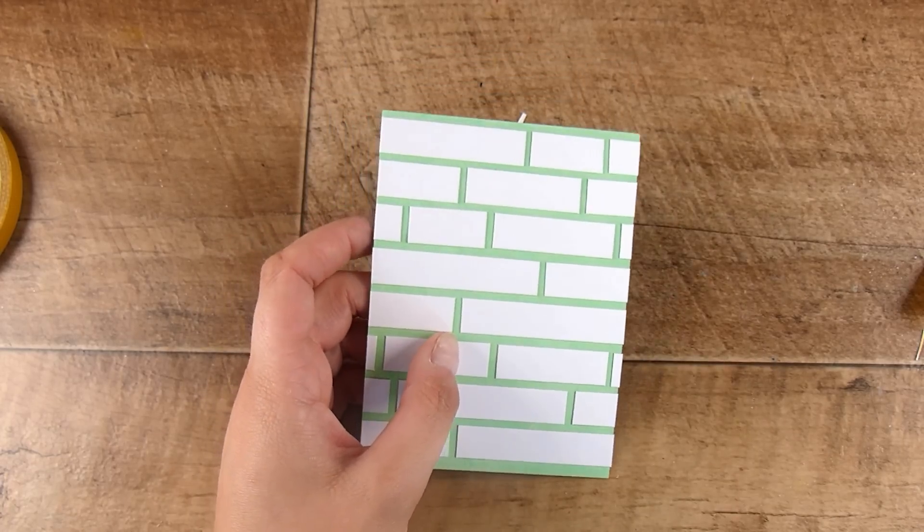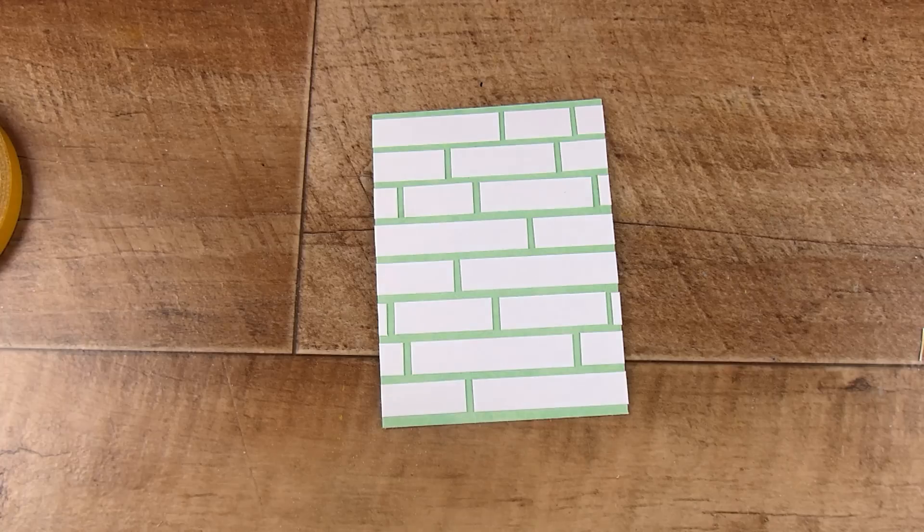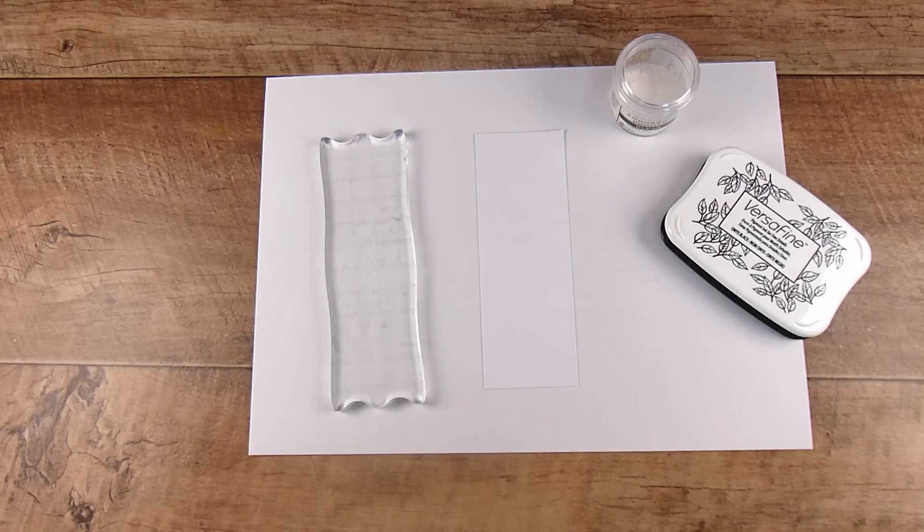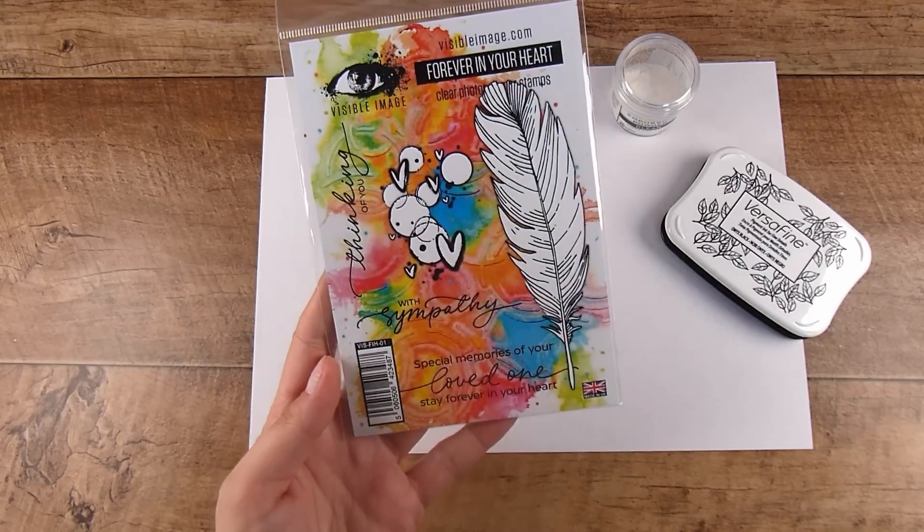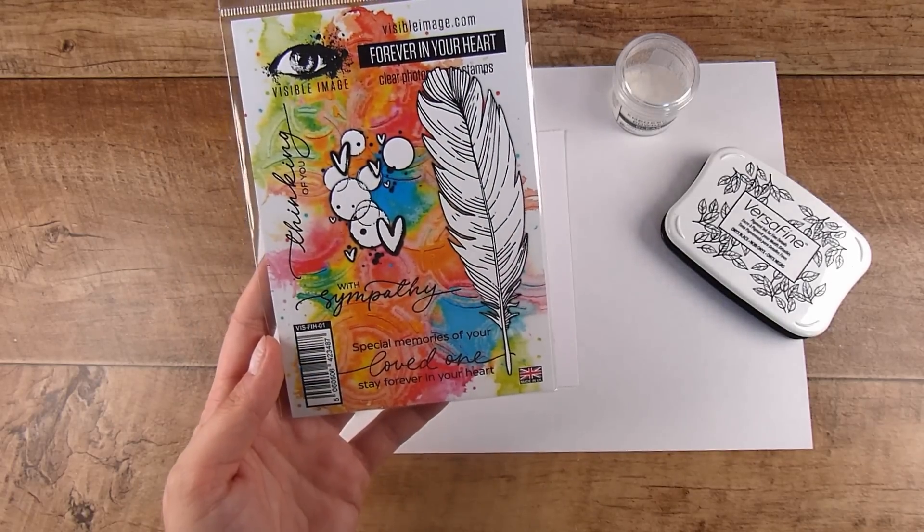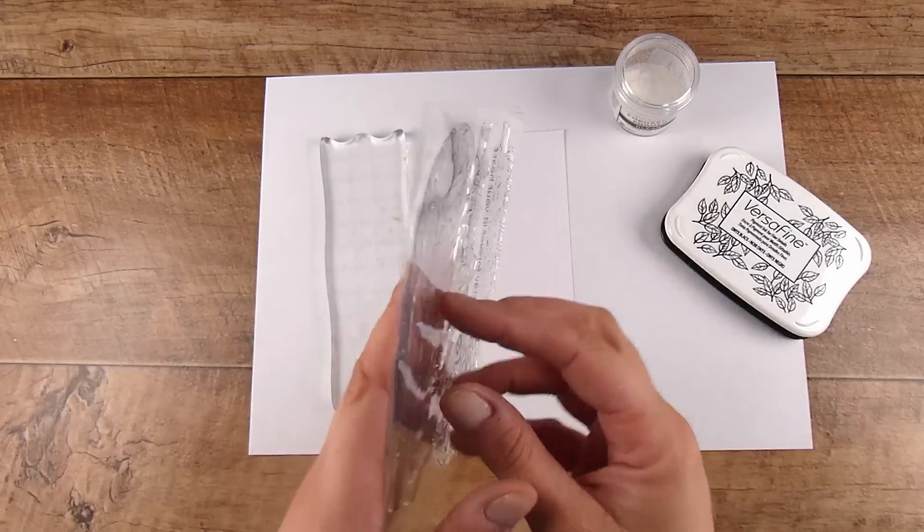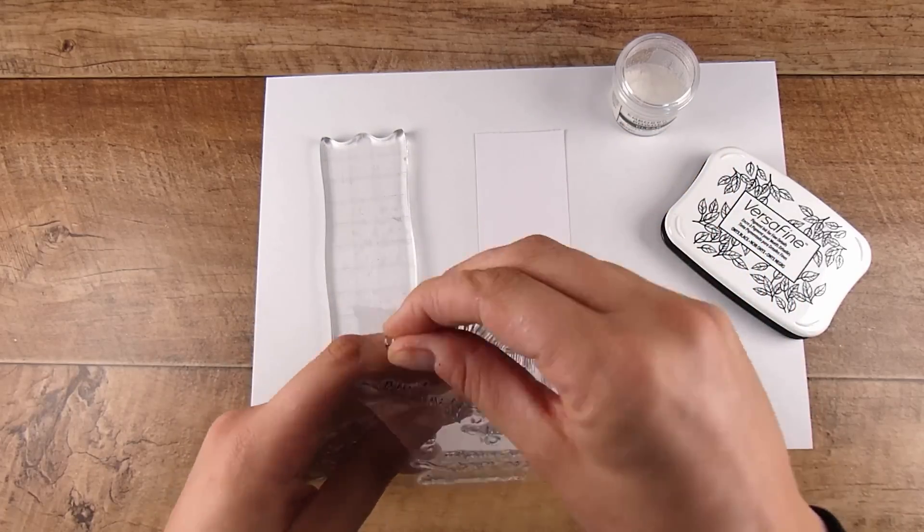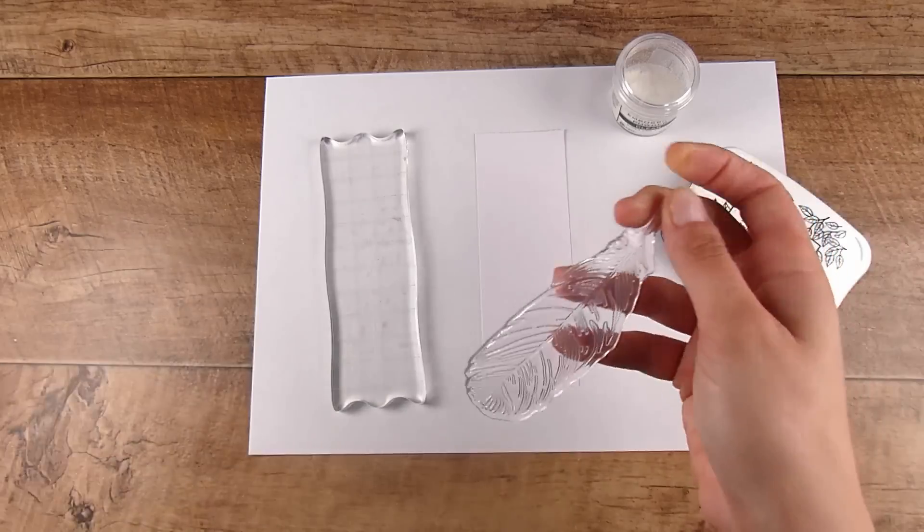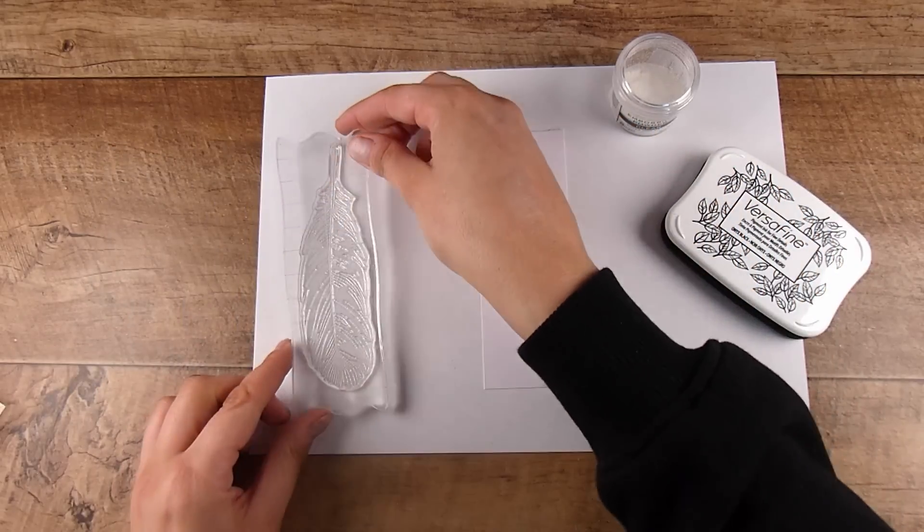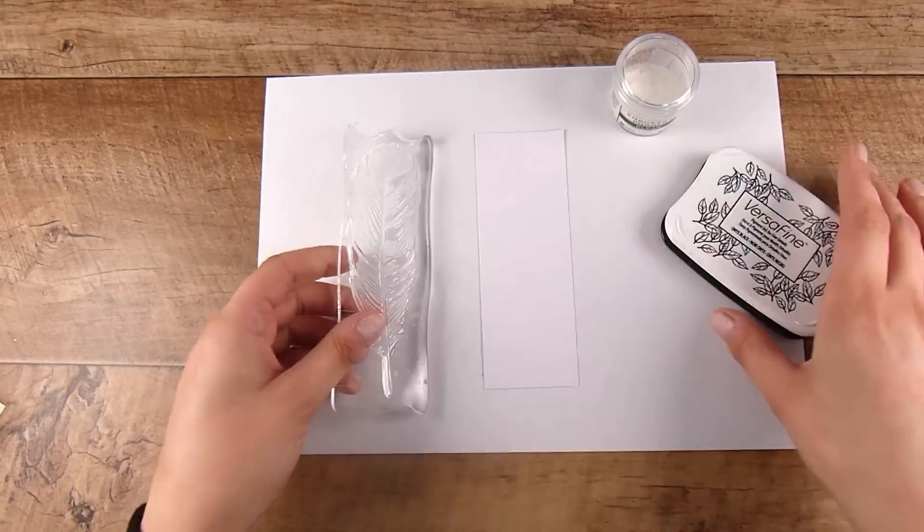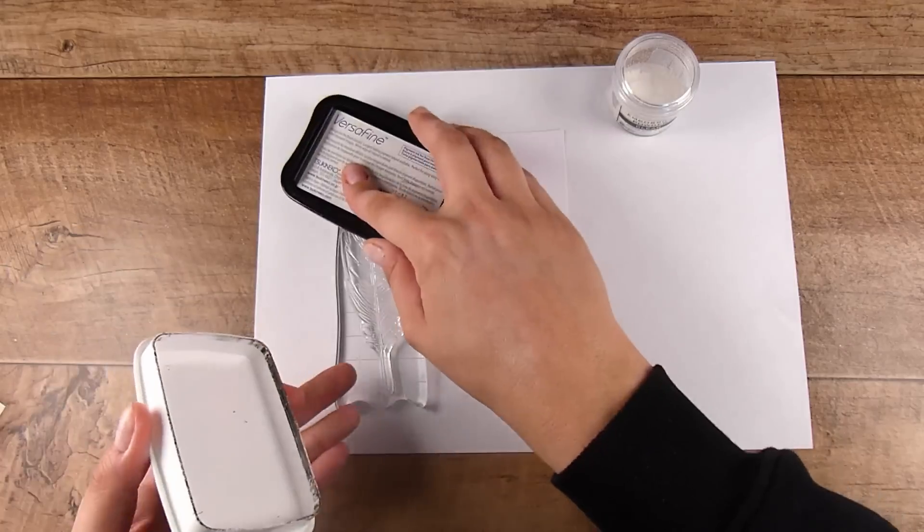From here obviously we've just created the background so there is so much more that you can do. I have the Visible Image stamp set, this is called Forever In Your Heart and it is one of my absolute favorites. This feather is just gorgeous. I love the sentiments, they are sweet and gorgeous, but for just today I'm going to be using this feather.